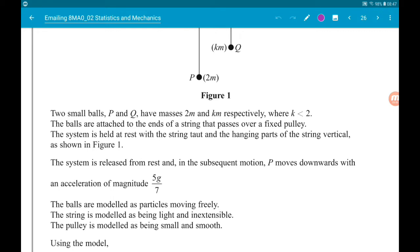We're told then that the system is released from rest and in the subsequent motion P moves downwards with an acceleration of magnitude 5G over 7. The balls are modelled as particles moving freely. The string is modelled as light and inextensible.